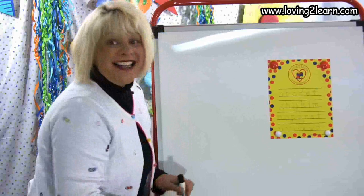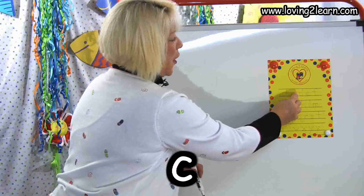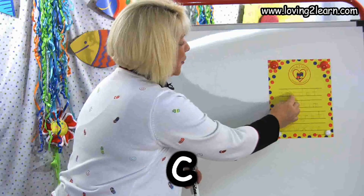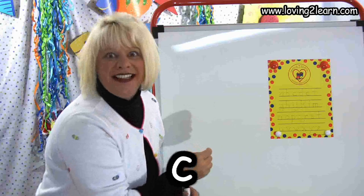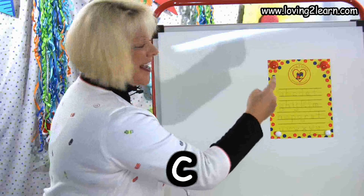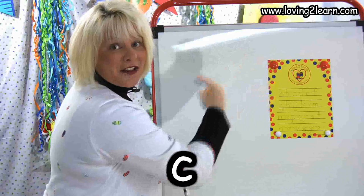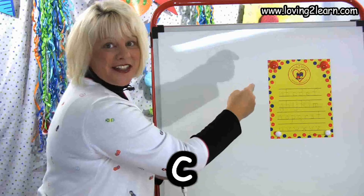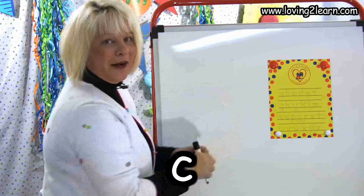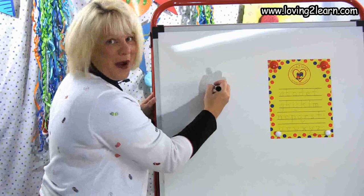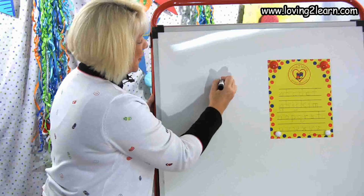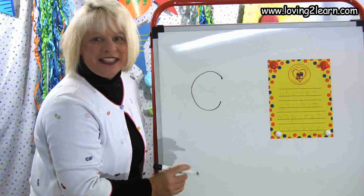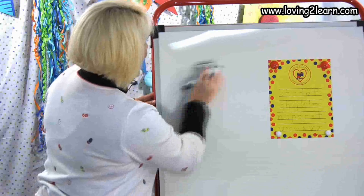The next letter is the letter C. With the letter C, we start at the top and circle halfway around. Let's do it in the air: start at the top and circle halfway around. Let's do it on the whiteboard: start at the top, circle halfway around. There's the letter C. We'll erase that.